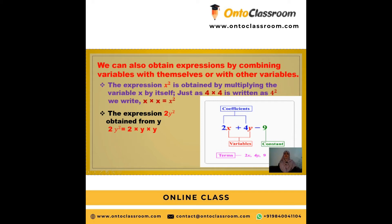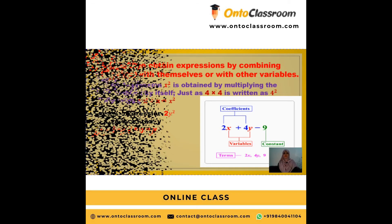Here is a clear example of an algebraic expression: 2x + 4y - 9. Here 2 and 4 are the coefficients of the terms, x and y are the variables, and -9 is the constant. So the terms are: 2x is one term, 4y is another term, and -9 is another term.